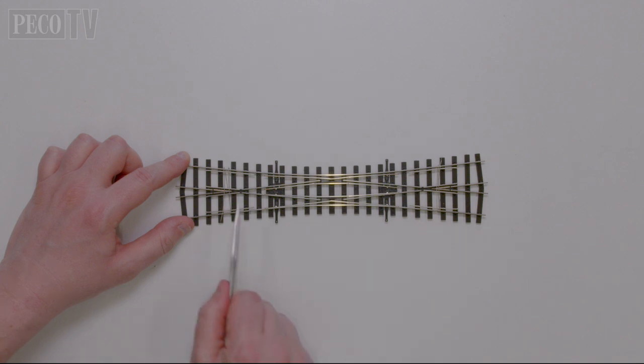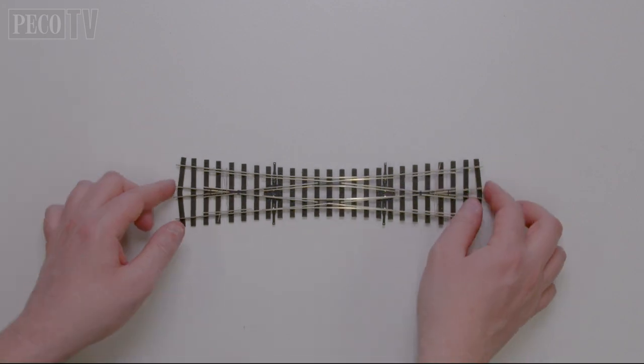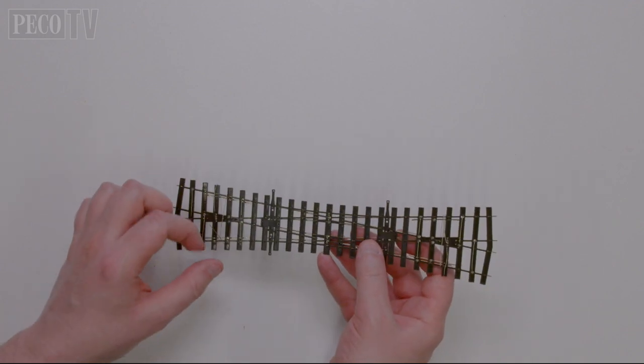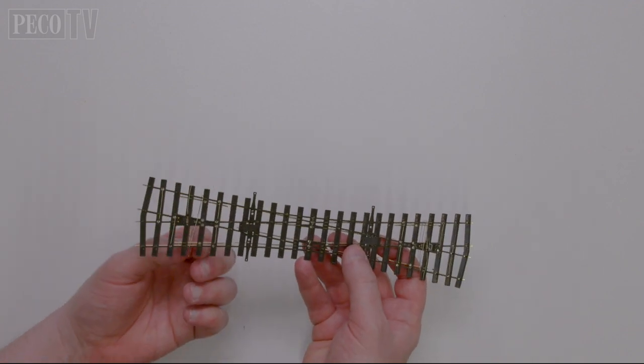They're available in the Unifrog format, giving superior running, and wires are welded to the underside allowing the motor to power or switch the polarity of the frog if desired.